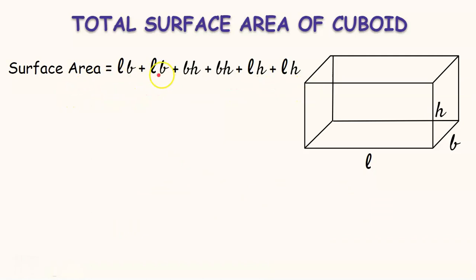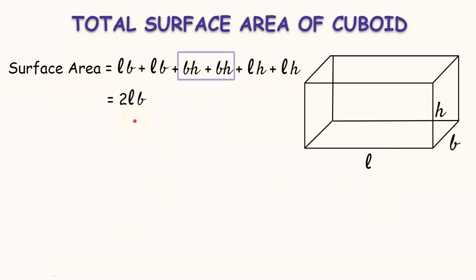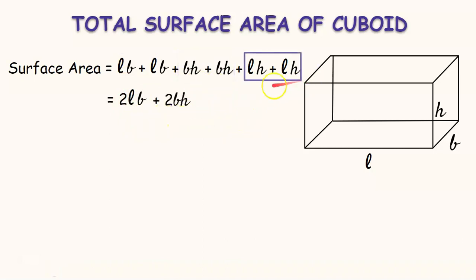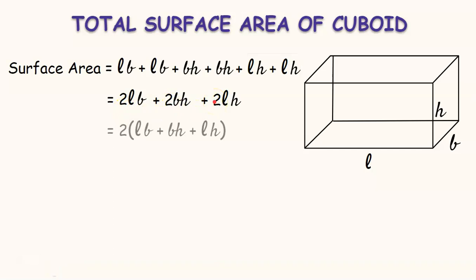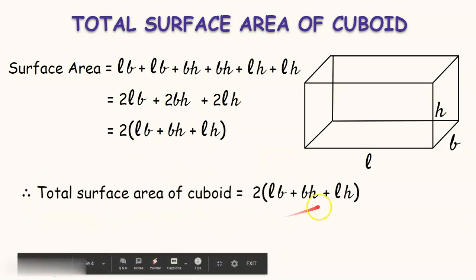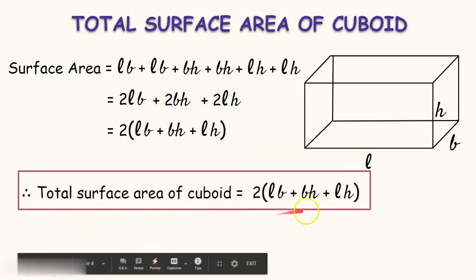In this expression, LB + LB can be written as 2LB, BH + BH can be written as 2BH, and LH + LH can be written as 2LH. So, by taking 2 as common in these terms, we get 2 into (LB + BH + LH). Therefore, the total surface area of the cuboid is 2(LB + BH + LH).